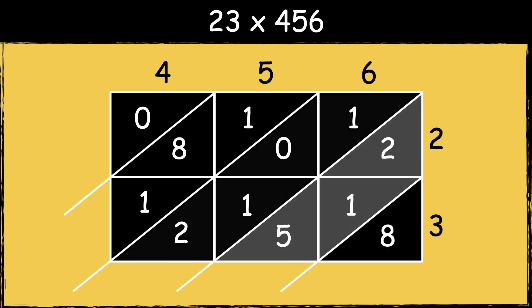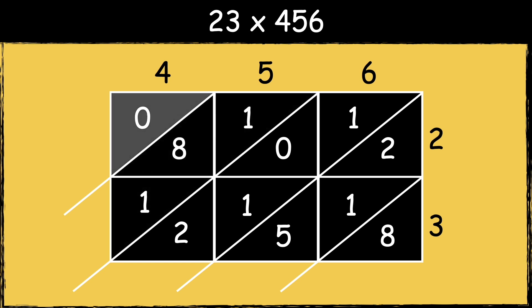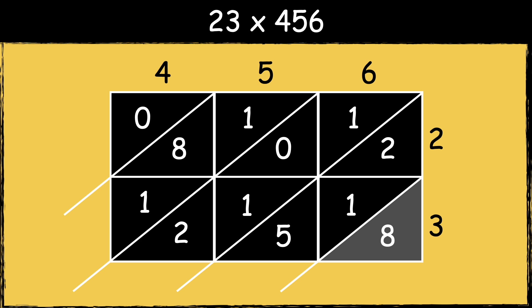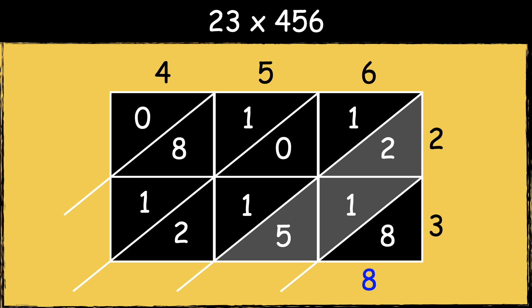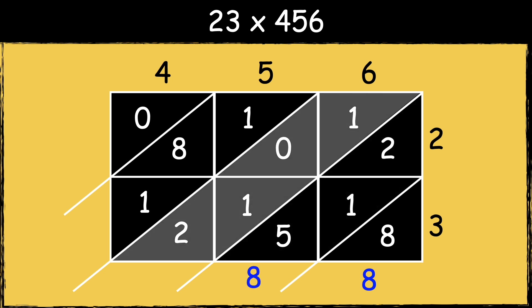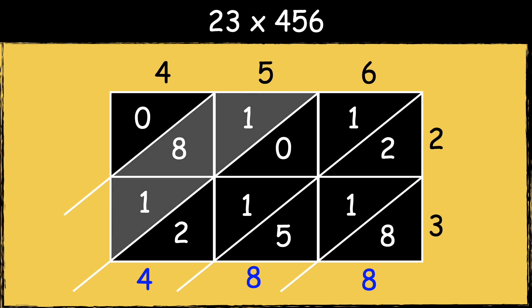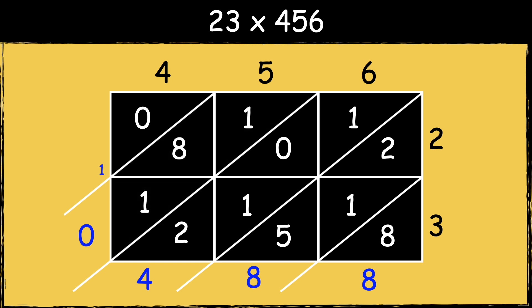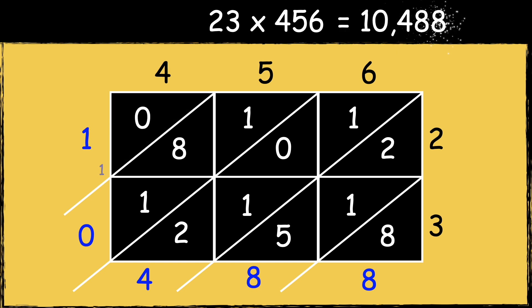The next step is to add along the diagonal strips, starting in the ones place going from right to left. In the ones place we have 8. In the tens place we have 5 add 1 add 2, which is 8. In the hundreds place we have 2 add 1 add 1, which is 4. In the thousands place we have 1 add 8 add 1, which is 10. We'll carry the extra 10 over to the next column, and then we have 1 add 0, so in the tens thousands place we have 1. So the answer is 10,488.